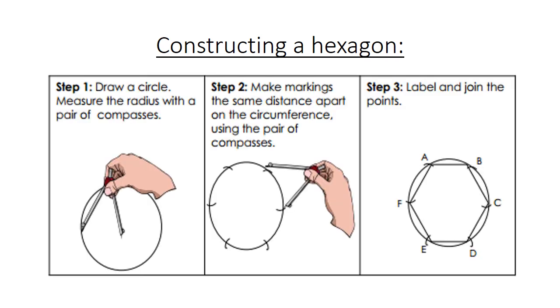So we are going to construct a hexagon. Step number 1: Draw a circle. Measure the radius with a pair of compasses. Step 2: Make markings the same distance apart on the circumference using your pair of compasses. Step 3: Label and join the points.